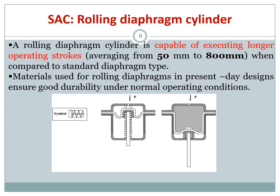A rolling diaphragm cylinder is a modified version of the diaphragm cylinder. It has a flexible diaphragm that can expand and follow the body of the cylinder, allowing it to extend up to 800 millimeters — more than ten times the normal stroke length — because compressed air can fill a much larger space.